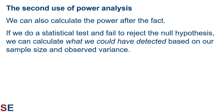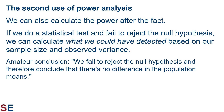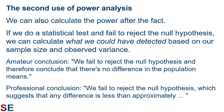There is a second use of power analysis: we can also calculate the power of a test after the fact. If we do a statistical test and fail to reject the null hypothesis, we can calculate what we could have detected based on our sample size and observed variance. The amateur conclusion for a two-sample t-test that fails to reject the null hypothesis is: 'We fail to reject the null hypothesis and therefore conclude there's no difference in the population means.' The professional conclusion is more nuanced: 'We fail to reject the null hypothesis, which suggests that any difference between the population means is less than approximately [some value].' This second statement admits to the risk of type 2 error and puts a value on the upper bound for what could have been missed.